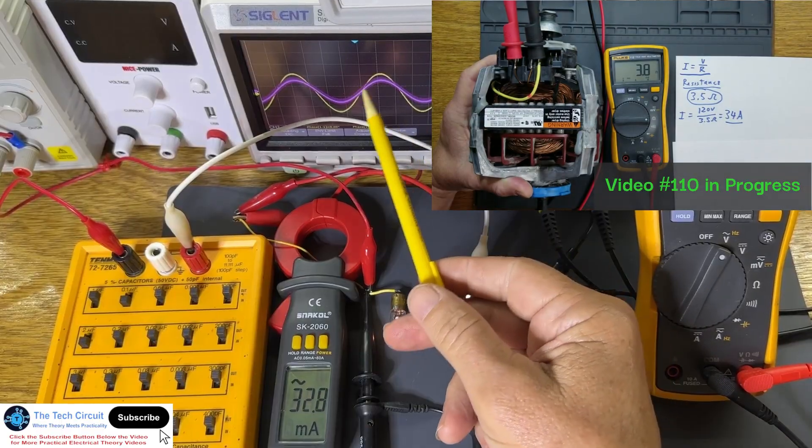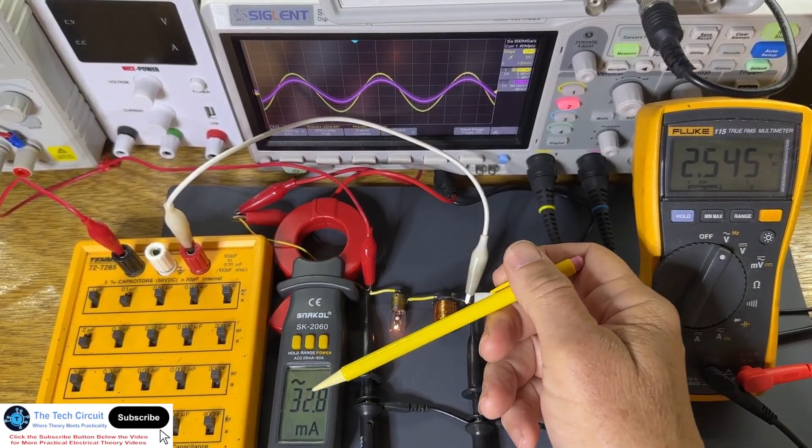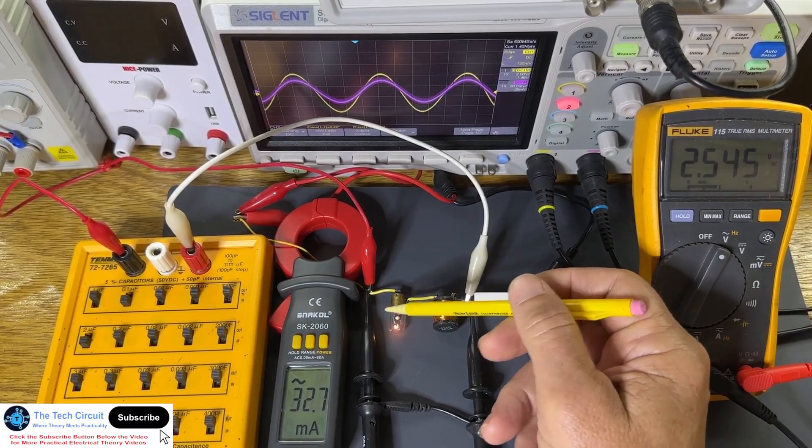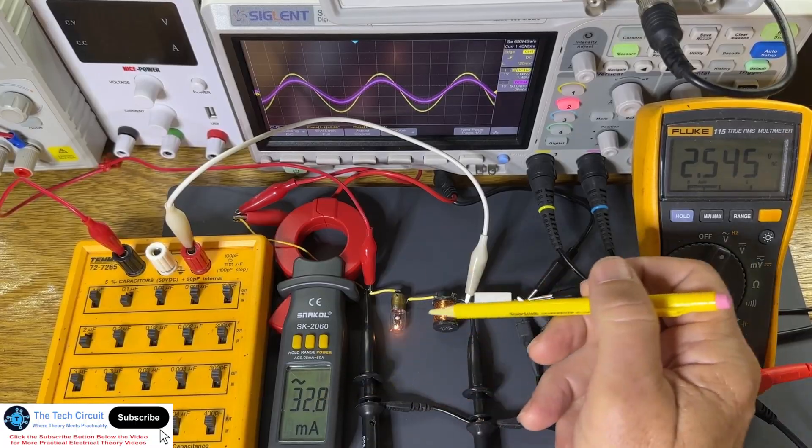So by power factor correcting the circuit, all the power delivered to the circuit is now being utilized by the resistive component of this load, i.e. the light bulb, in order to do useful work. So that's power factor correction in action.